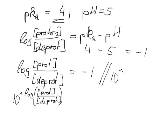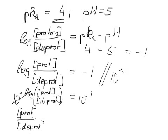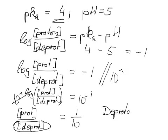So we have 10 to the power of log protonated over deprotonated, and I'll just do a bracket around that, equals 10 to the power of minus 1. 10 and log cancel out. So we've got concentration of protonated over deprotonated equals 1 over 10. So in this case here, our deprotonated form would be predominant. The deprotonated form is predominant. It's actually 10 times more than the protonated form.